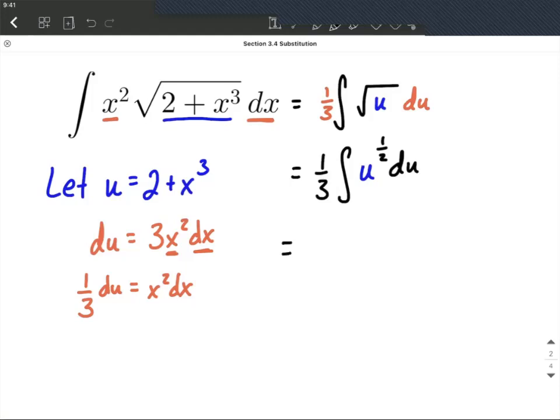From here, we can use the power rule. So the one-third comes down as constants come along. We still have u. This time, we're going to increase the exponent by 1. So when we have one-half plus 1, we can strategically write that 1 as 2 over 2.